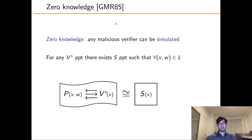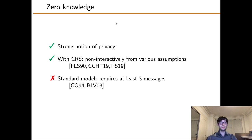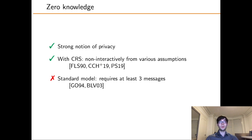Zero-knowledge hides everything about the witness — anything a malicious verifier could learn by interacting with the prover, it could learn by itself. Formally, we define this using a simulator-based indistinguishability game. Zero-knowledge is a very strong privacy notion and easily implies both witness-hiding and indistinguishability. It can be achieved without interaction if you have a common reference string; these NIZKs are known from a variety of reasonable assumptions. Unfortunately, in the standard model we have lower bounds — you need at least three messages to build a zero-knowledge proof system for NP. With this limitation in mind, to reduce the number of messages, we should look at weaker privacy notions.